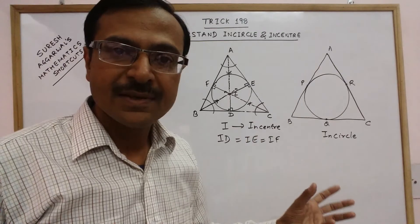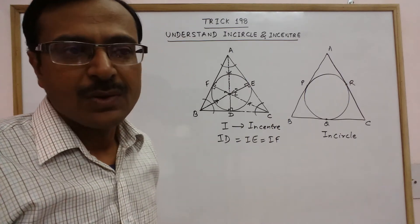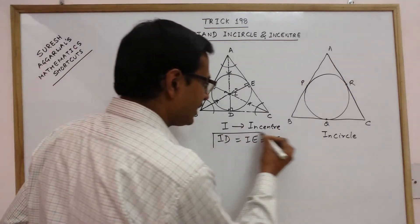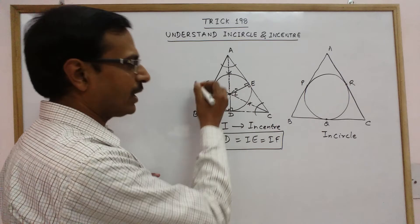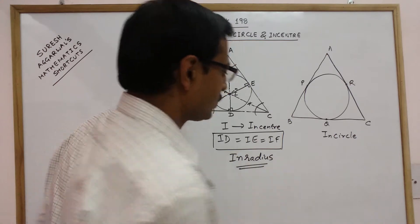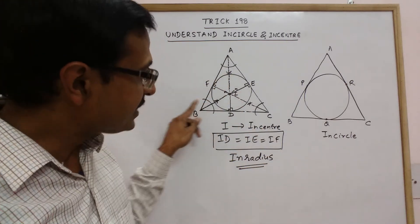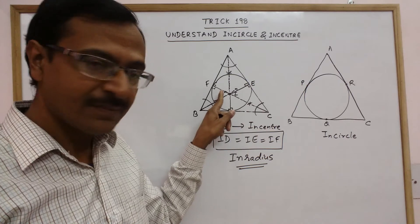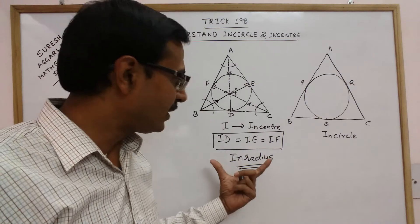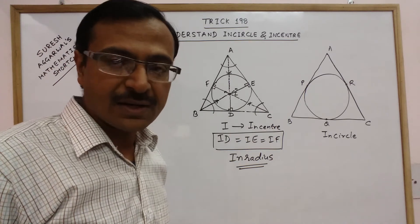Once you have understood what incircle is and what incenter is — these three distances ID, IE, or IF are called the inradius. Incircle is the circle touching all three sides of the triangle; incenter is the point of intersection of the angle bisectors; and the inradius is the radius of this incircle.